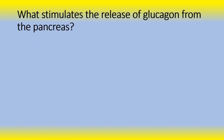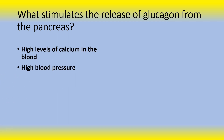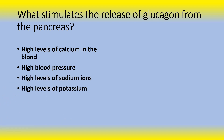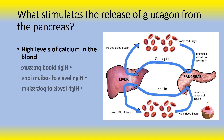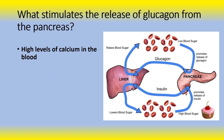Next question: What stimulates the release of glucagon from the pancreas? Is it high levels of calcium in the blood? Is it high blood pressure? Is it high levels of sodium ions? Or is it high levels of potassium? The answer is high levels of calcium in the blood. If the muscles fail to use glucose, it can lead to excessive sugar levels in the blood and a condition called diabetes. Within muscle cells are stores of calcium that signal the muscle to contract, and changes in calcium levels enhance the uptake of glucose that fuel these contractions.